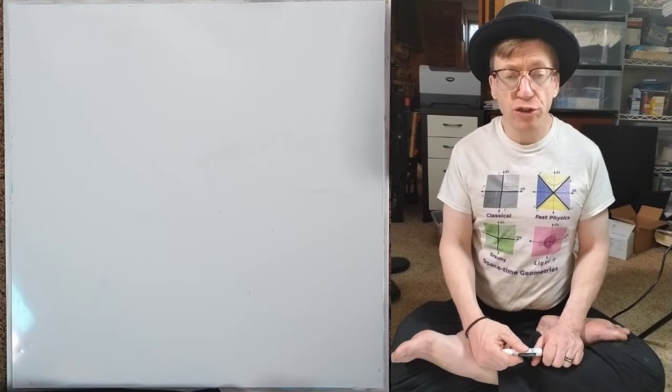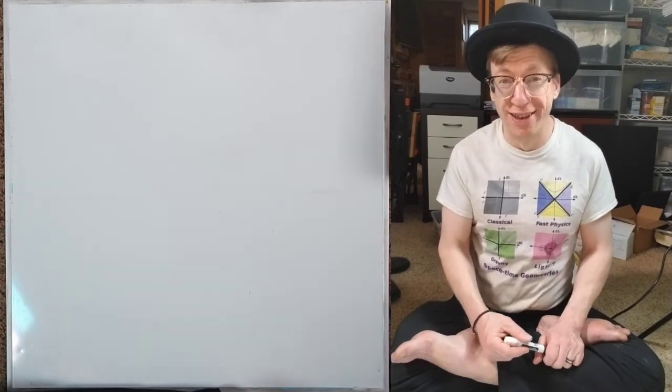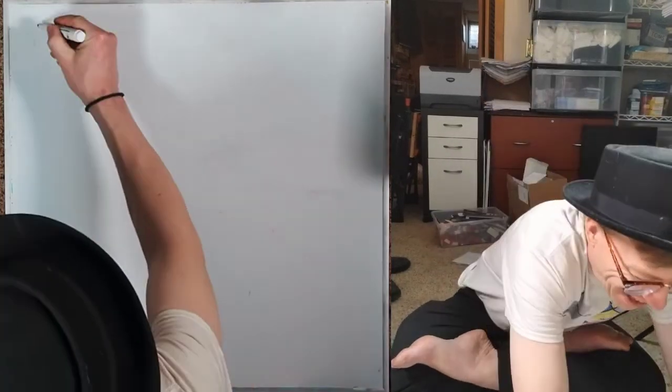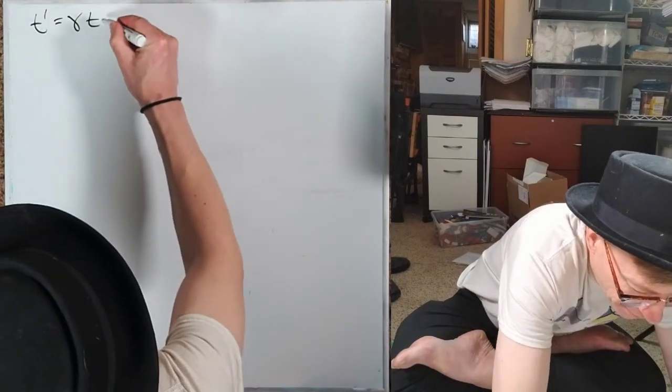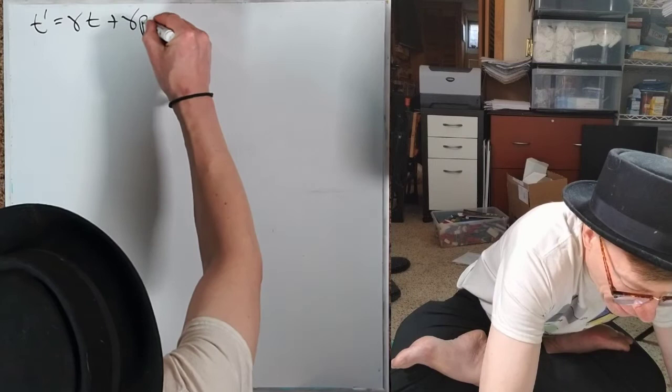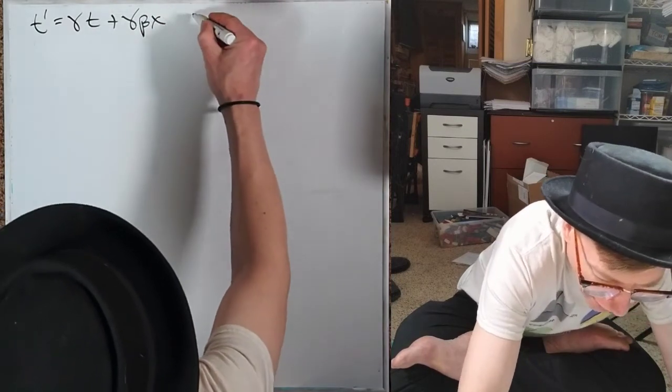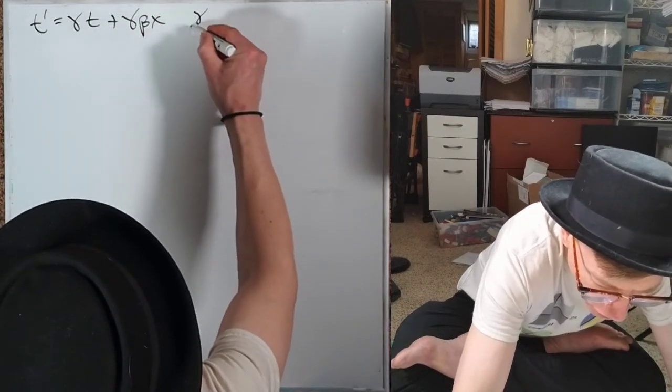So let's start with the transformation we know works. And that would be t' = γt + γβx. Where these are the usual things?